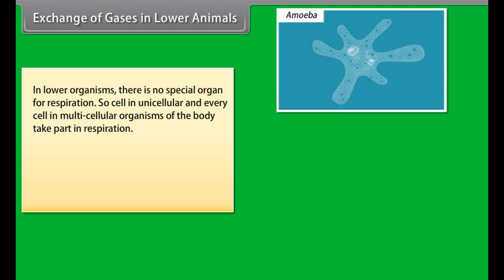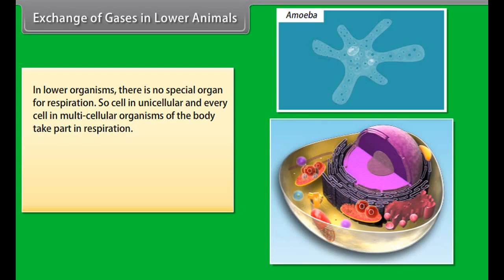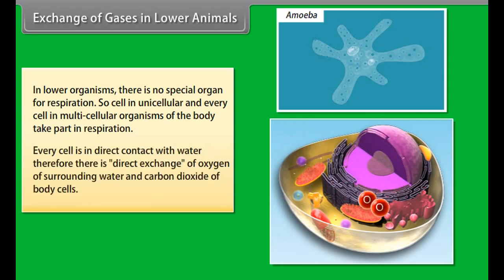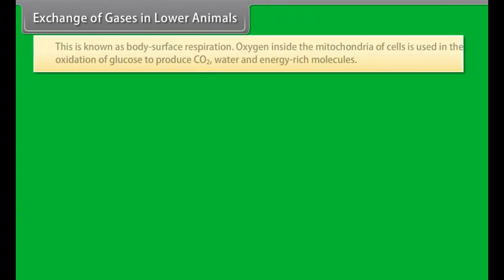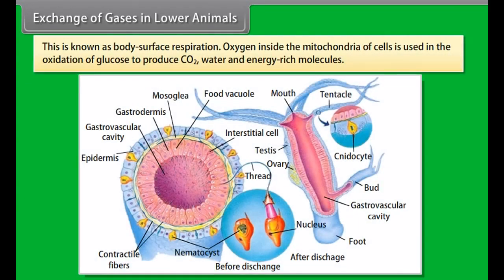Expiration is the process by which CO2 is expelled out from the lungs. Internal respiration is the process by which gases are exchanged between blood and tissue fluid, and between tissue fluid and cells. Cellular respiration is the process by which cells use oxygen for metabolism and give off CO2 as a waste product.